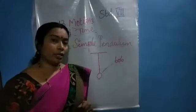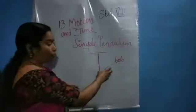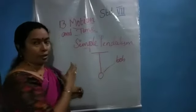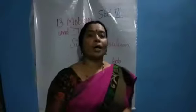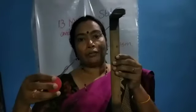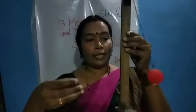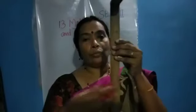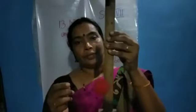The motion the simple pendulum makes is also known as oscillatory motion. Why is it called oscillatory motion? The simple pendulum moves in a side-to-side motion, which is also known as oscillatory motion. I am pulling it from one side and releasing — it moves side to side. Can you see? It is moving side to side like the clock.